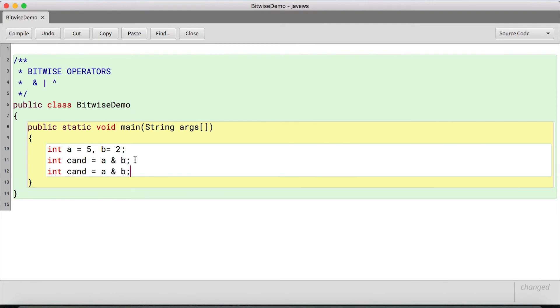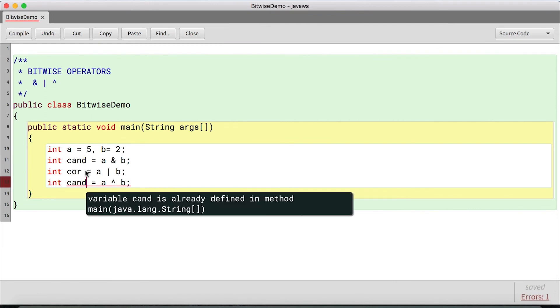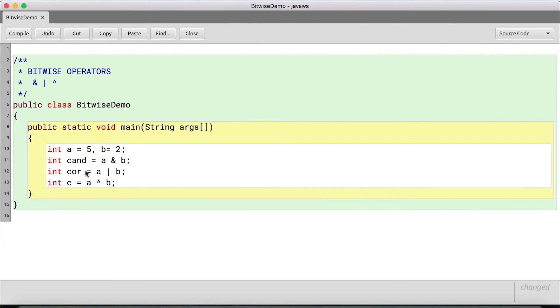Same way, I will be creating 2 more variables. This will be for OR, this is for XOR. So I'll give this name as cor, this name as cxor.